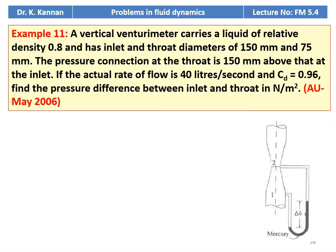Example number 11 from the May 2006 question paper: a vertical venturi meter, as shown in the figure, carries a liquid of relative density 0.8 and has an inlet and throat diameter of 150 millimeters and 70 millimeters. The pressure connection at the throat is 150 millimeters above that at the inlet. If the actual rate of flow is 40 liters per second and CD equals 0.96, find the pressure difference between the inlet and the throat in Newtons per meter square.